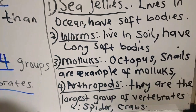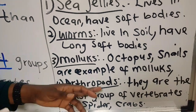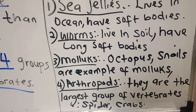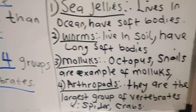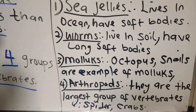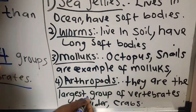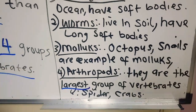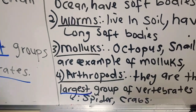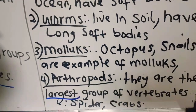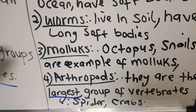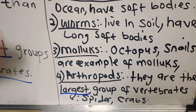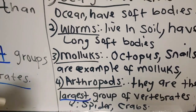Now, number four, we have the group of arthropods. The arthropods are the largest group of invertebrates. We have the spider and the crabs, and their body parts are jointed together. So, these are the four groups of invertebrates.